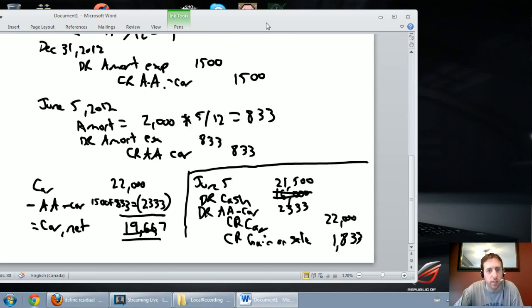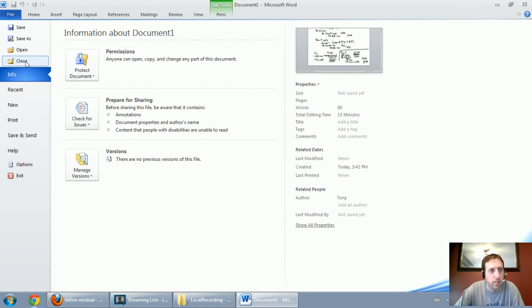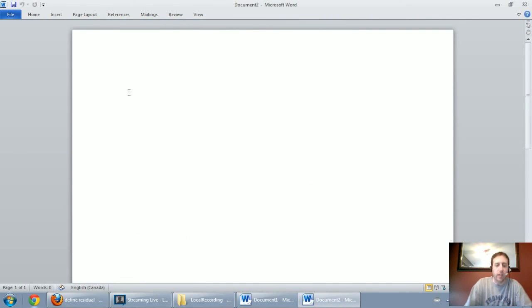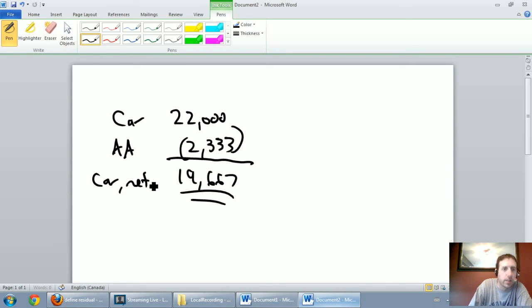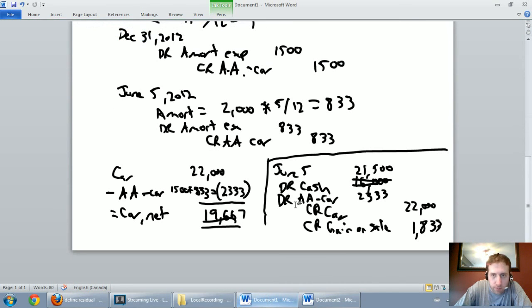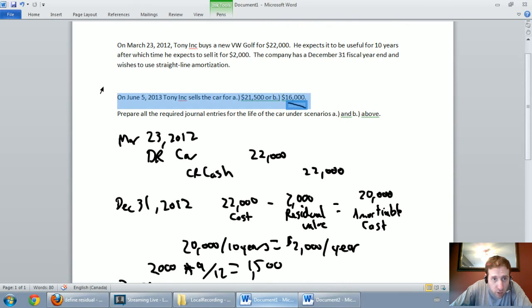Let's have a look at the other scenario. Everything's the same in the other scenario up until that last entry. We have a car and accumulated amortization on our car. Our car is worth $22,000. The accumulated amortization on the car so far was $2,333. Everything's the same up until that sale journal entry. Again, we have a car that's worth 19,667 on our books. That's our car's net book value. And now we sell it. But rather than selling it for $21,500, we're going to sell it just for $16,000. We sell the car on June 5th for $16,000.